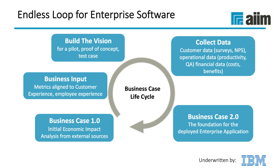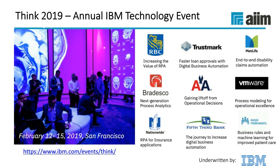Lastly, in February 2019, many of the stories I told today were customers who came to our annual event called Think. Think 2019 is in San Francisco, February 12th through the 15th. I help with their presentations and get to know them. I'm looking forward to hearing from Royal Bank of Canada, TrustMark, MetLife — which has a great story about their disability claims automation project — and I've also convinced MetLife to join us at the AIM conference. There's a great scope of customers there, so I would encourage you to click on the link, register, and come see all the technology and customer stories. We're also going to have a lot of fun in San Francisco.